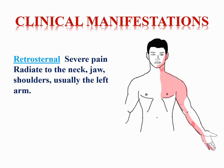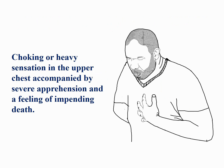Clinical Manifestations: Ischemia of the heart muscles may produce pain, choking, or heavy sensation in the upper chest. The pain is often retrosternal, meaning it occurs deep in the chest behind the sternum. Typically, the pain is localized and may radiate to the neck, jaw, shoulder, and usually to the left arm. The patient often feels tightness or choking sensation, and the pain is accompanied by severe apprehension and a feeling of impending death.